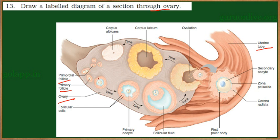These primary oocytes undergo development, giving rise to secondary follicles and tertiary follicles. The tertiary follicles are the completely matured follicles, also referred to as Graafian follicles. These are the secondary follicles, and the difference between the two is the follicular cells — their number has increased and the primary oocyte has also increased in size.